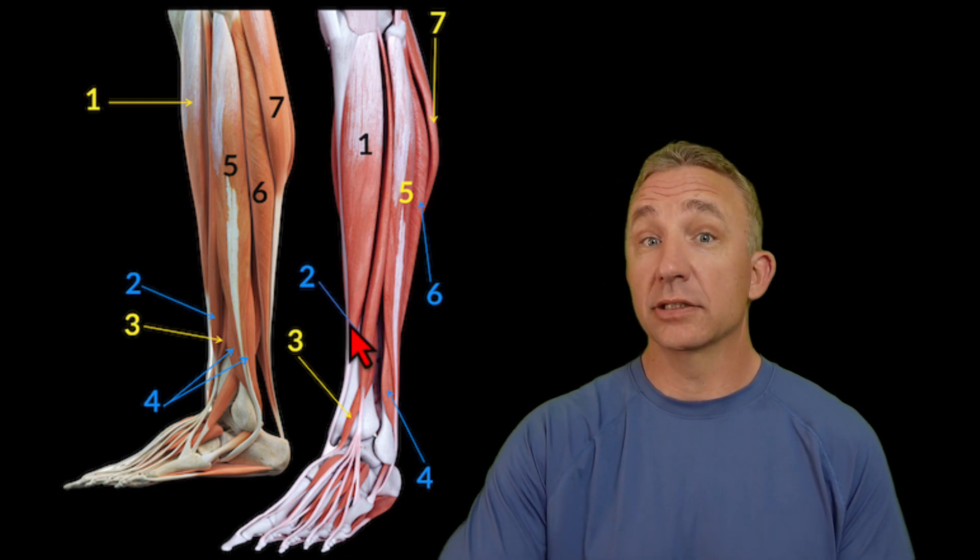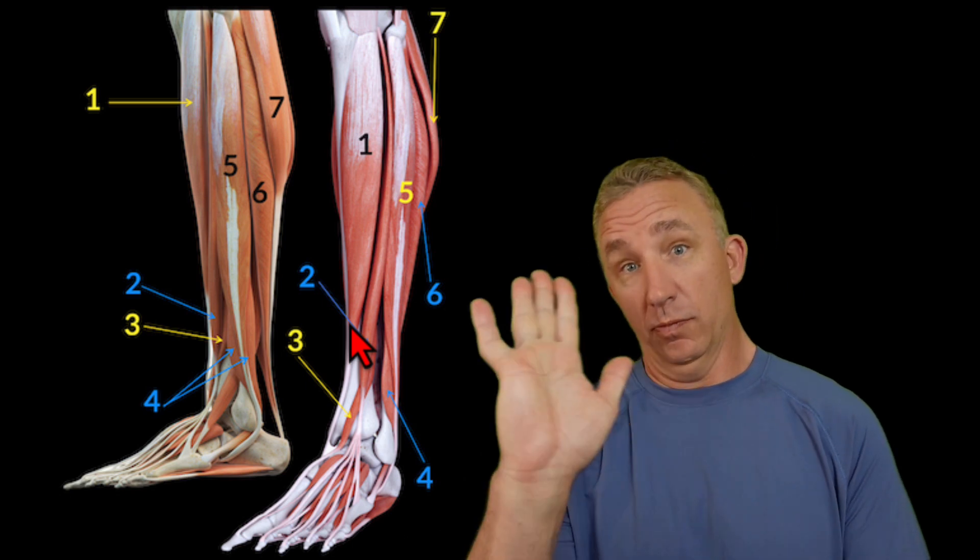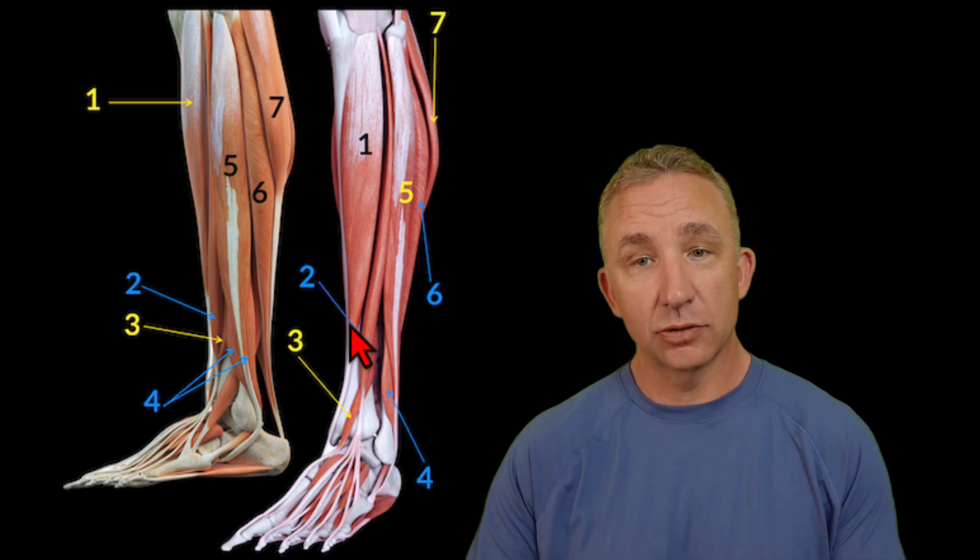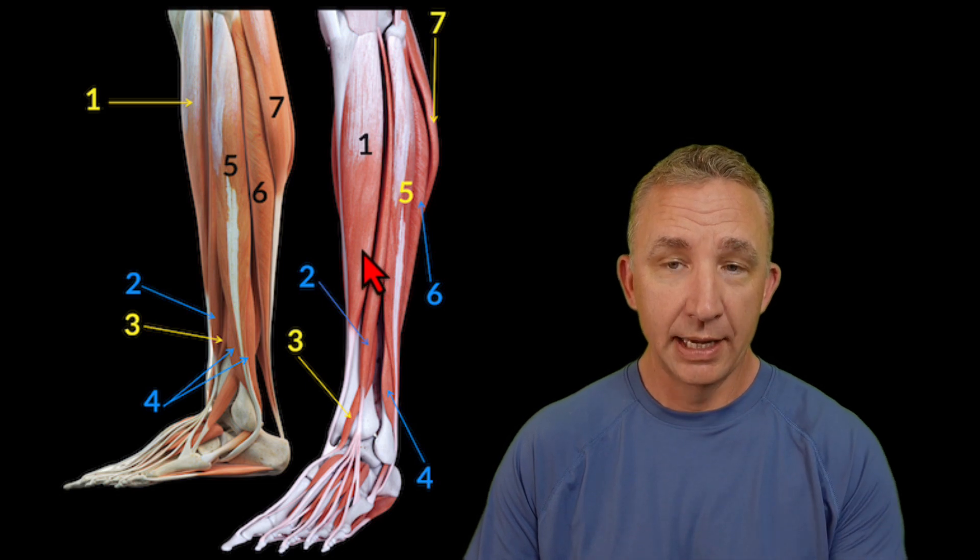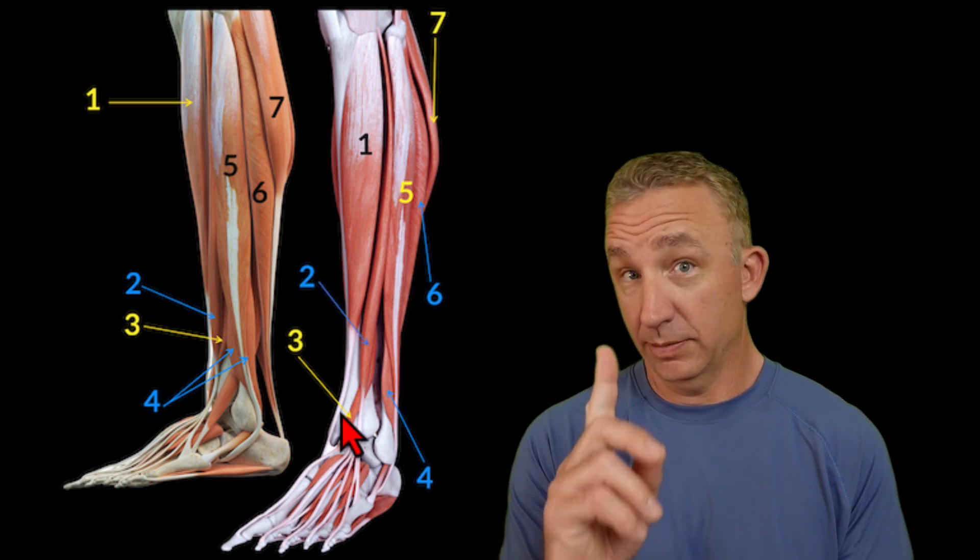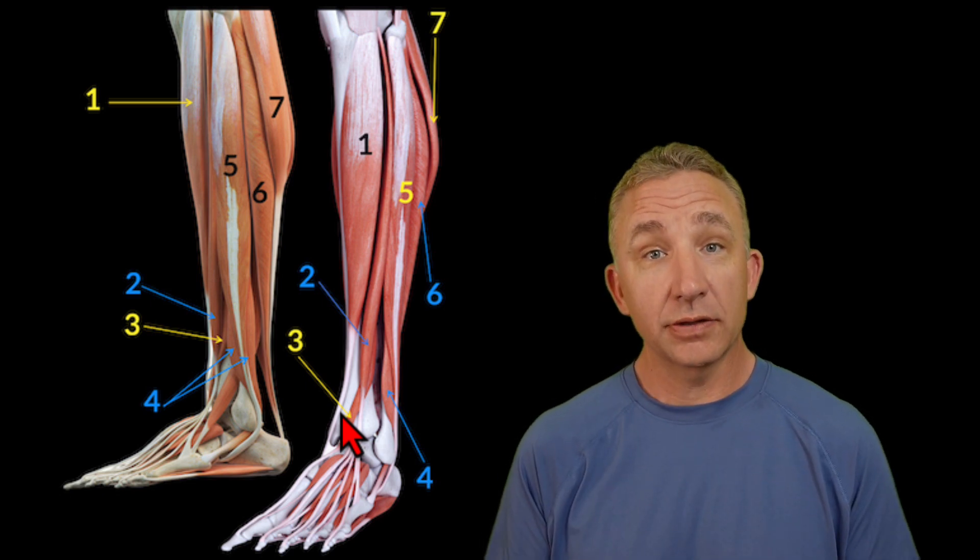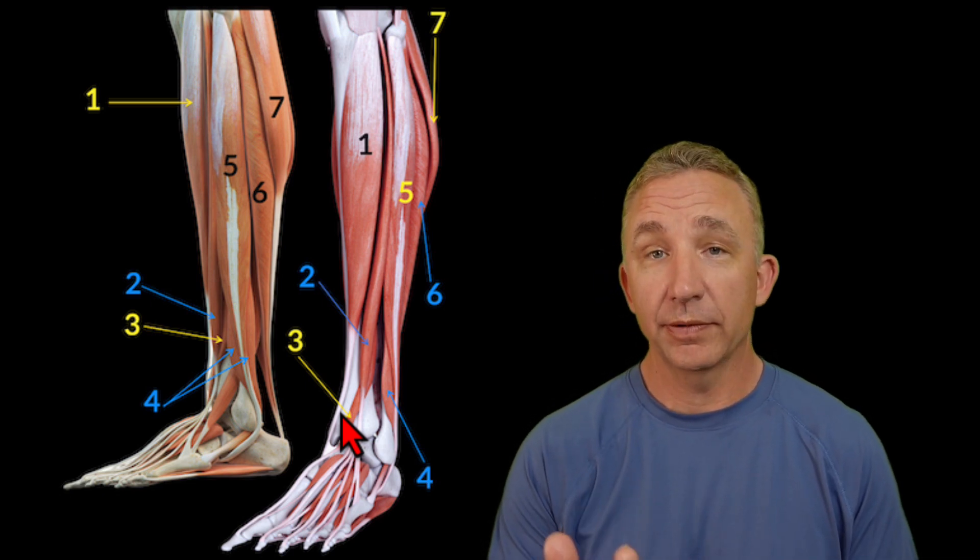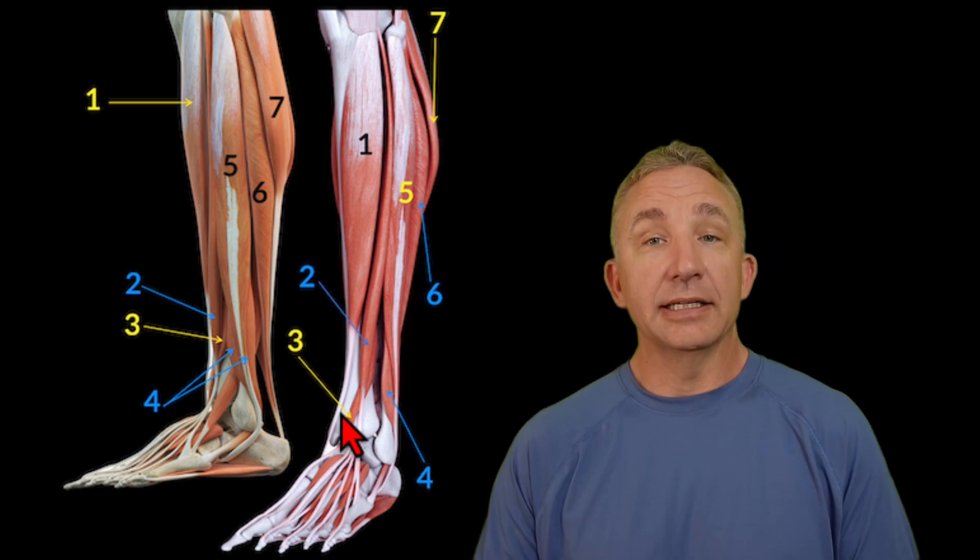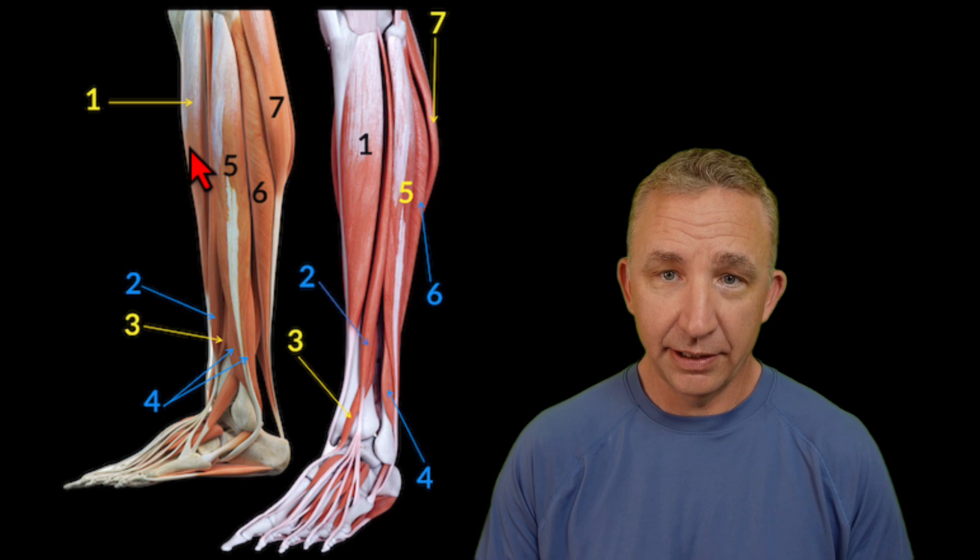Remember, dorsal flexion is going up and rolling back on my heel. So I go up and roll back on my heels, that's dorsal flexion. So in order to do that, that tibialis anterior will insert at one of our metatarsals, specifically number one, towards the big toe side. Then it also connects to one of our cuneiforms. Remember, there's three cuneiforms, and it's specifically the medial cuneiform. So tibialis anterior.